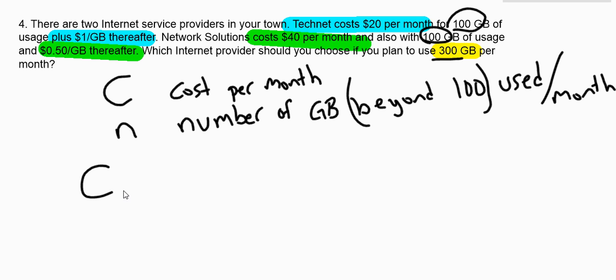past the 100 that I get as a basic, the number of gigabytes beyond 100 used per month. Now I can create two equations. One of them, I'll just temporarily call it CT, meaning the cost at TechNet, is $20 basic fee. And then for every gigabyte I use beyond the 100, it's going to be another dollar. The other company, Network Solutions, starts at $40, and then it's only 50 cents for every gigabyte past the 100 point. So there's the two equations.